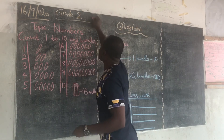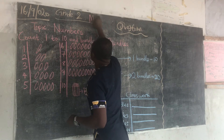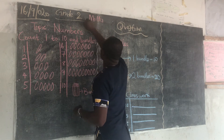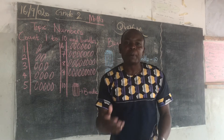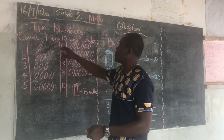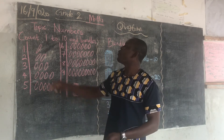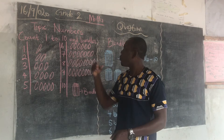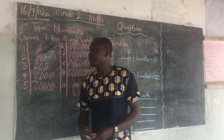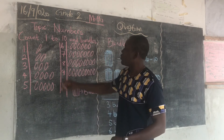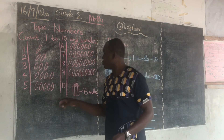Today in Mars, we will be looking at numbers. We will be talking about numbers. Now I want to see how we can count, how we can be counting from 1 to 10 and bundles. Looking at this, we have a series of numbers here from 1 to 10.